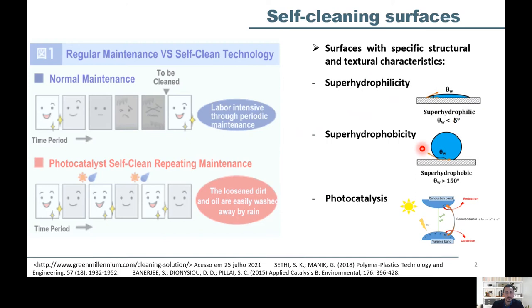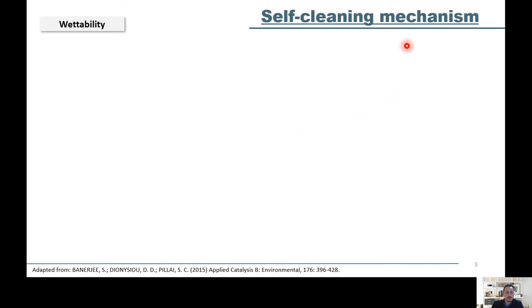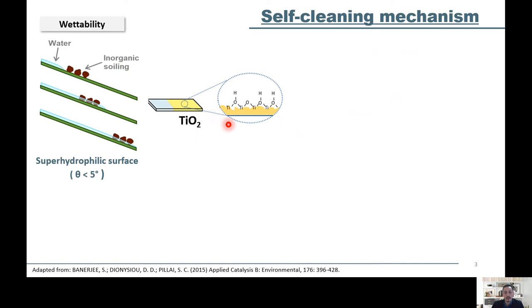The way a drop of water wets a surface allows the removal of inorganic soil. For example, if a surface is covered with a thin film of titanium dioxide, as shown here, a typical semiconductor, extreme wettability can occur by dragging the inorganic particles as shown in this image.